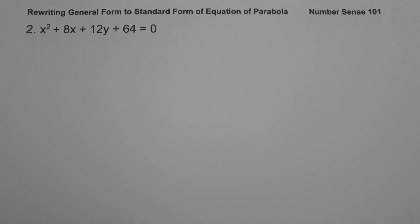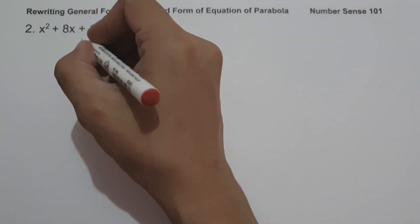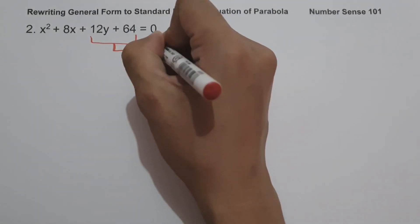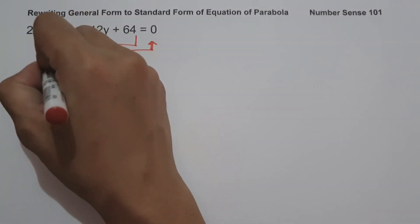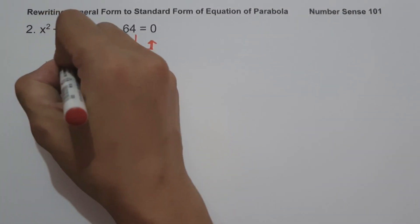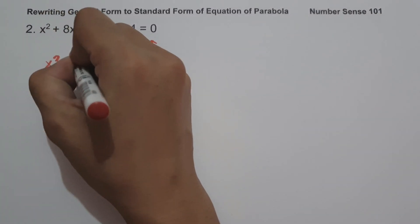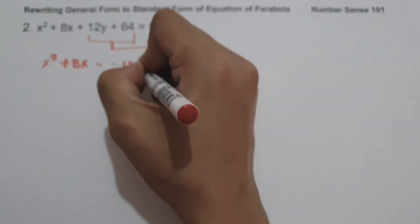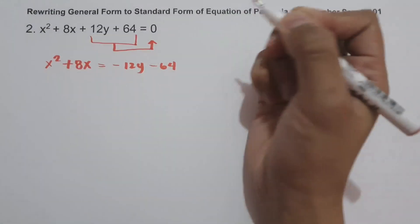On example number 2, we have x² + 8x + 12y + 64 = 0. To write the given equation into standard form, let us move 12y and 64 to the other side of the equation. So we have x² + 8x = -12y - 64.